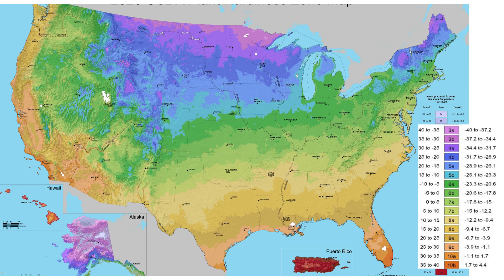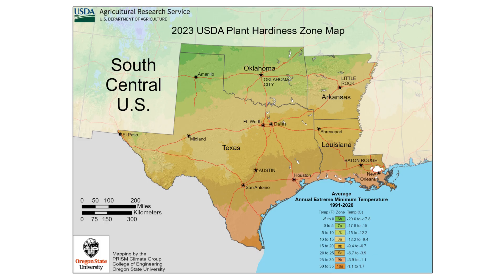Here you see a breakdown of each zone and the average low temperatures that correspond to each zone. In the continuous United States, it looks like we have zones from Zone 3A through 10B. The average low temperatures range from negative 40 degrees Fahrenheit in Zone 3A to 35 degrees in Zone 3B. In my previous zone, 8A, according to the USDA, the average lowest temperature we would see each year was between 10 and 15 degrees Fahrenheit. Now in Zone 8B, our average lowest temperature is 15 to 20 degrees.